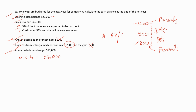The first point says that 3% of the total sales are expected to be bad debt, which means 3% of this sales revenue will not be received by the company. So we have to calculate the revenue that will be earned after the bad debt, which is equal to $46,000 multiplied by 3%. The bad debt is equal to $1,380.